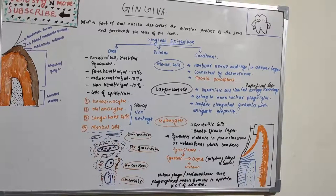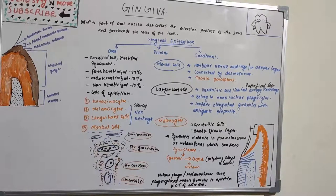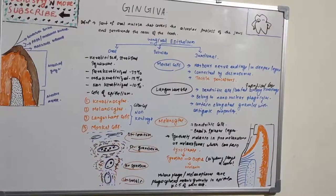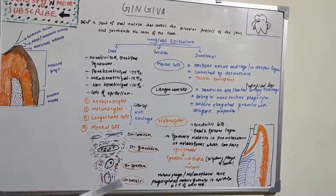These are very important and commonly asked as short notes in exams. Note: do not confuse Langerhans cells in epithelium with Langhans cells seen in tuberculosis pathology — they are different. Merkel cells are located in the deeper layer of epithelium, harbour nerve endings, are connected to adjacent cells by desmosomes, and have been identified as tactile receptors.